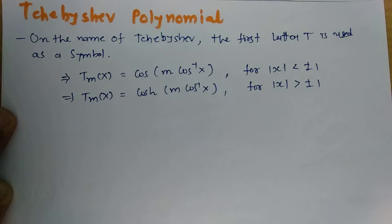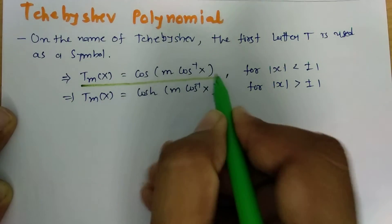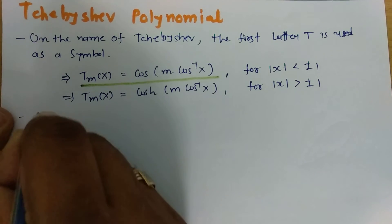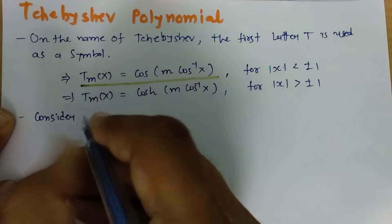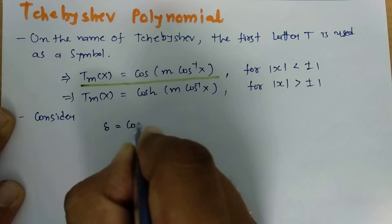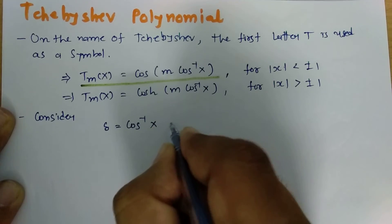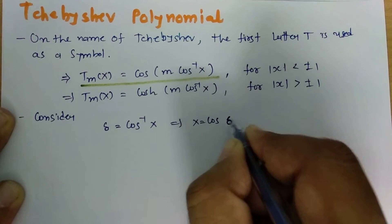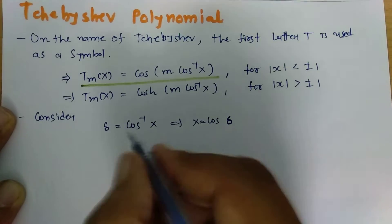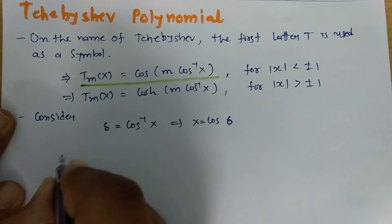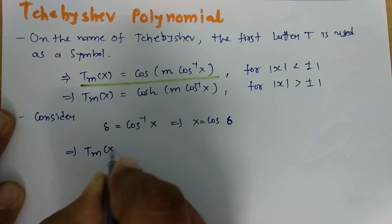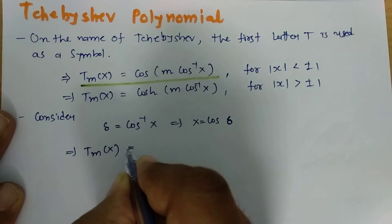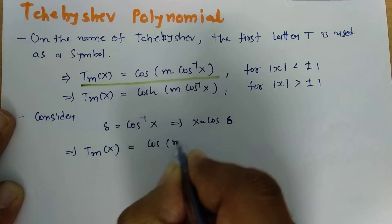I will be considering the first case to derive Chebyshev Polynomial. If I consider delta equals cos inverse of x, then we can say x equals cos delta. Let us place that in this function, so our function will be Tm of x equals cos of m delta.